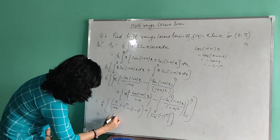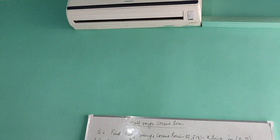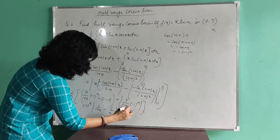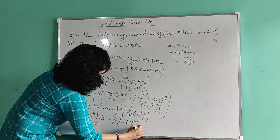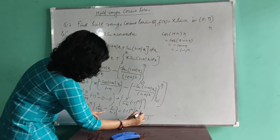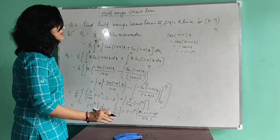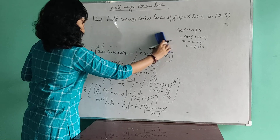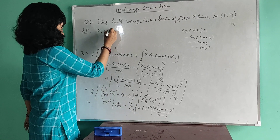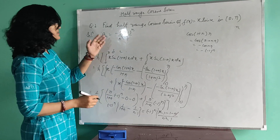After cancelling π, we have (−1)ⁿ·[1/(1+n) + 1/(1−n)]. Simplifying with common denominator n²−1: 1/(1+n) gives (n−1)/(n²−1) and 1/(1−n) gives −(1+n)/(n²−1), which sums to −2/(n²−1). Therefore aₙ = −2(−1)ⁿ/(n²−1).